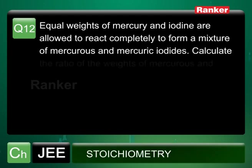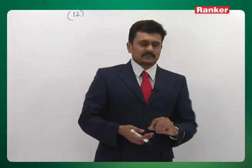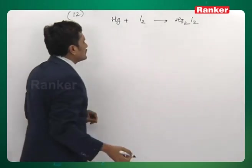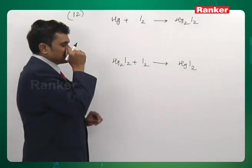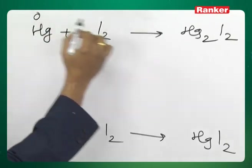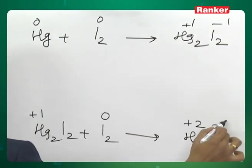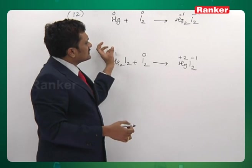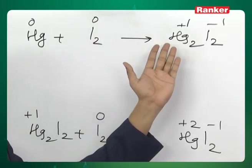Next question: equal weights of mercury and iodine are allowed to react completely to form a mixture of mercurous and mercuric iodide. Find the weight ratio of mercurous to mercuric iodide formed. Mercury and iodine react in equal weights. Initially mercurous iodide is formed, which subsequently reacts with excess iodine to give mercuric iodide, since mercury changes its oxidation state first to +1, then to +2 as halogens are oxidizing agents.